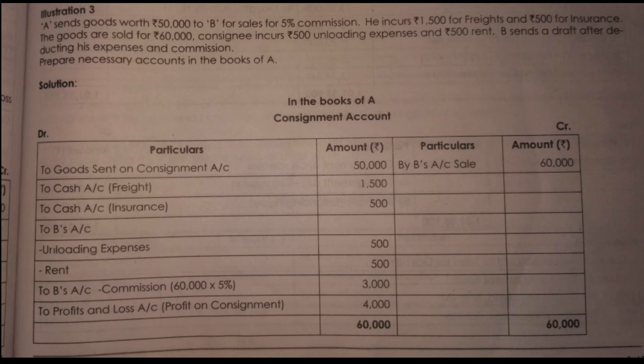Next, the consignee incurs 500 for unloading expenses. If you look at that, we will include this. Here are the expenses, here is the income, here is the cost — so if you look at this, we will get profit. That is the idea.